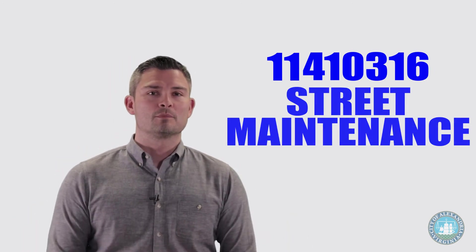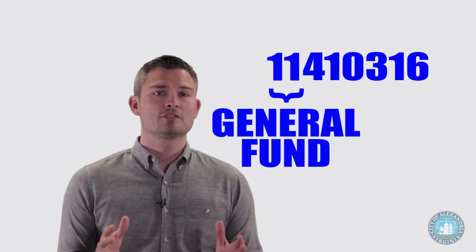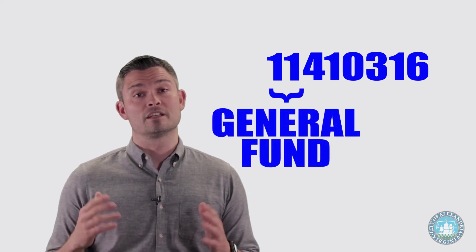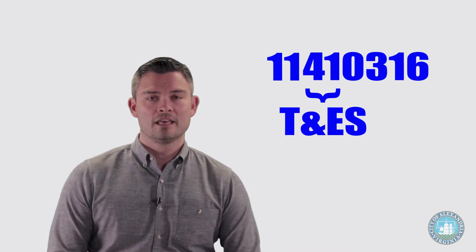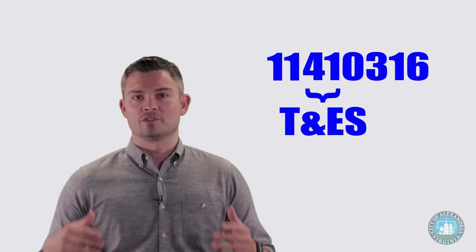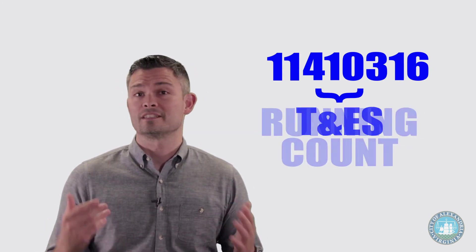Using the intelligence baked into this segment, let's see what we can learn about it. The first two digits are the fund. In this case, fund 11, which is the general fund. The second two digits are department, which in this case is 41, which is TESS.